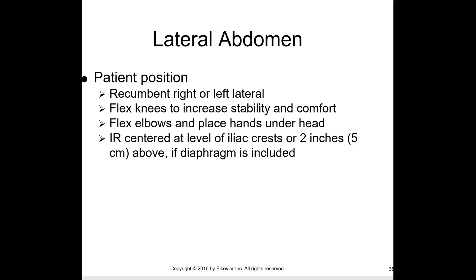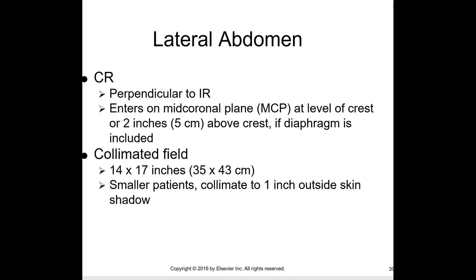For smaller patients, collimate eight to one inch outside the skin line. For the lateral abdomen, patient position is recumbent right or left lateral, flex knee to increase stability and comfort, flex elbows and place hands under the head. IR is centered at the level of the iliac crest, or two inches above if the diaphragm is to be included. The central ray is perpendicular to the IR, centered on the mid-coronal plane at the level of the crest or two inches above if the diaphragm is included.